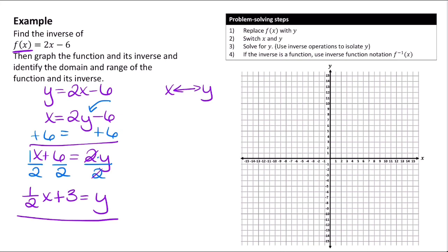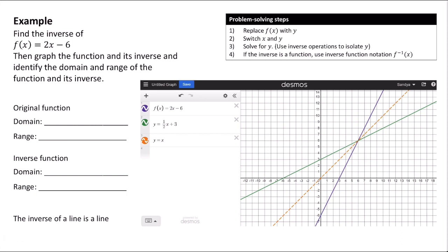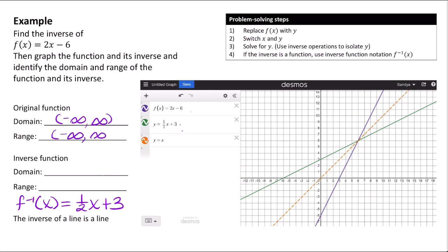Now we'll graph both the original function and the inverse in Desmos. Notice that the original function is a line and the inverse is also a line — so we have two linear functions. Lines always pass the vertical line test, so the inverse is also a function. We write it using inverse function notation: f⁻¹(x) = ½x + 3. For a line, the domain and range are both all real numbers, so both the function and its inverse share the same domain and range. You can see the inverse is reflected over the line y = x.